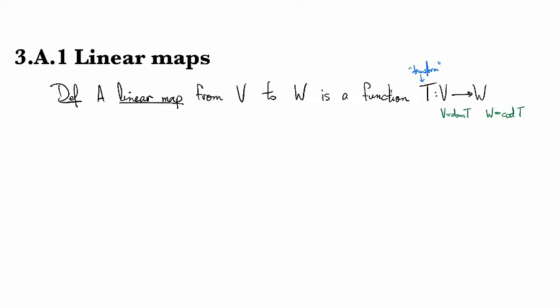A linear map is a function from V to W that preserves linear combinations. What that means is if you do a linear combination before or after applying the map, you get the same thing.